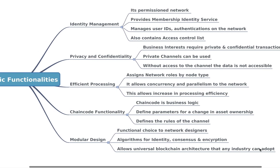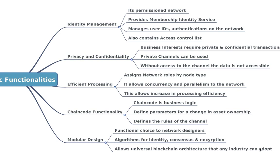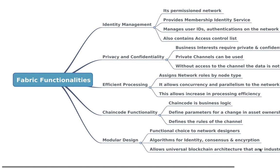The last functionality, which is very important, is the modular design — it's like plug and play. Hyperledger Fabric allows you to bring your own certificate authority, design it yourself, and plug it with the membership service provider so that you have full control. This makes it like a universal blockchain architecture that any industry can adopt.